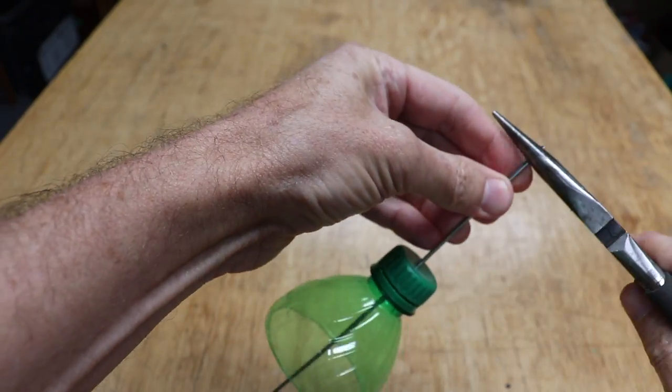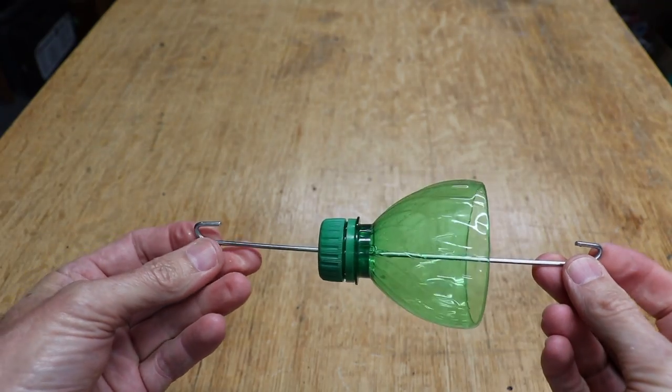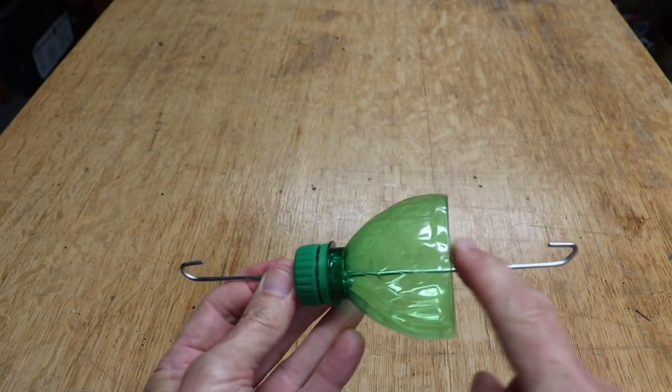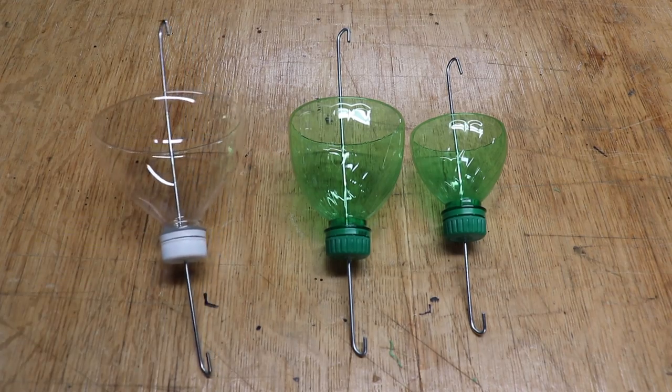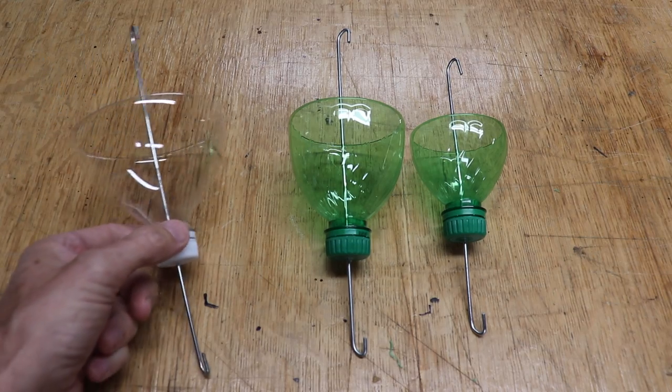The final step is to bend the ends. If you bend the ends in the same direction, it'll hang straight up and down. And here are the three using the two-liter bottle, the one-liter bottle, and the smaller one.